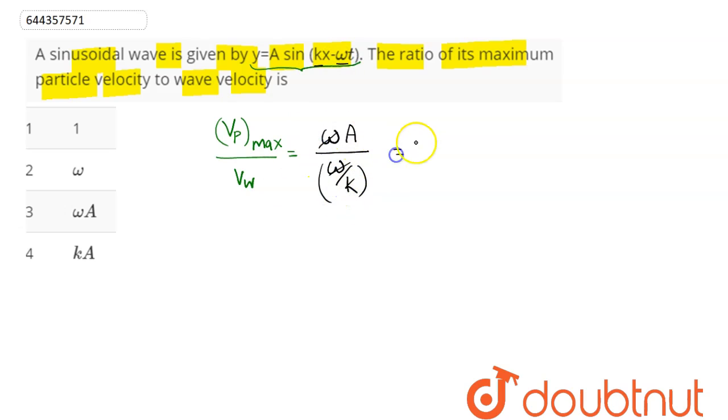so this comes as kA. kA means option number four, which we can say is the correct answer. Hence, amongst the four options, option four is our answer, that is,